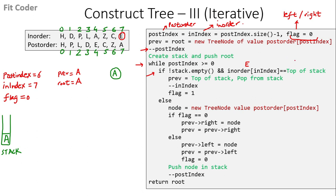Since top of stack (A) and inorder index (E) are not equal, we come into the else part. We create a new tree node with the sixth value of the postorder index, which is Z. Flag is 0, so we set previous.right to this node — right of A becomes Z. Previous is now updated to Z. Then we push Z in the stack and decrement postindex, so postindex becomes 5.